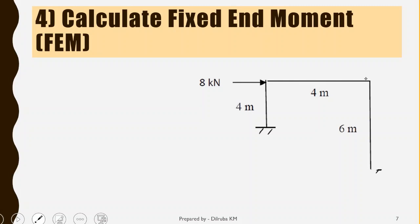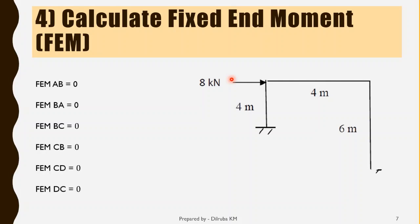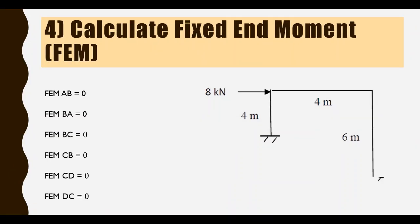For the fourth step, we calculate fixed end moments in order to convert the values of loads acting at points other than nodal points. But in this figure it is clear that all loads are acting only at nodal points. There is only one load — 8 kilonewtons acting at joint B — and since it is acting at the node itself, fixed end moment calculation is not necessary. There are no loads acting in between the members, so the fixed end moments are zero.